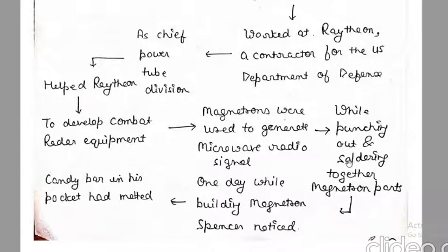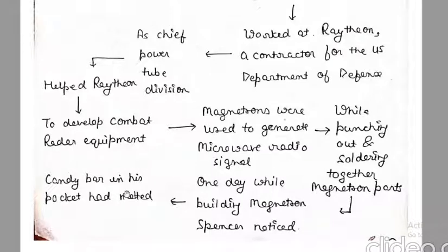One day, when Percy Spencer was punching out parts of the magnetron and soldering, he noticed that during this work, a candy bar kept in his pocket had melted. He surprisingly noted this and identified the heating capacity of microwaves — until then he had been using microwave signals only for radar.